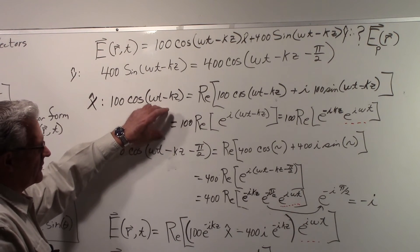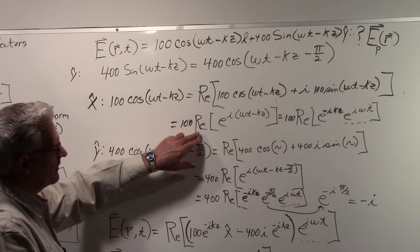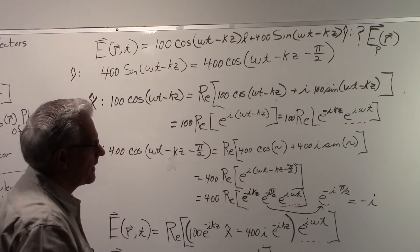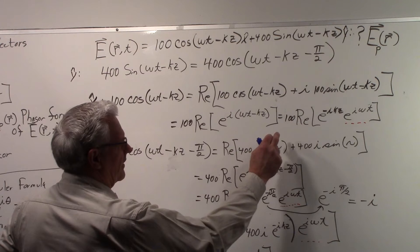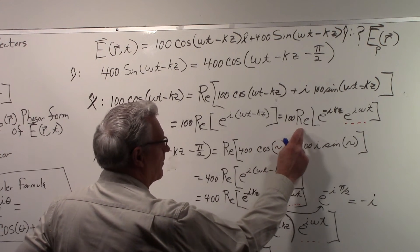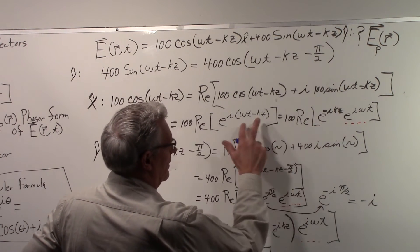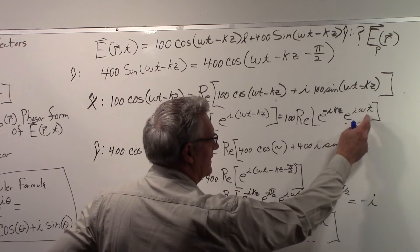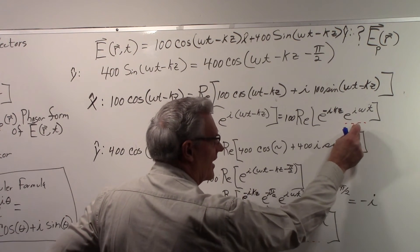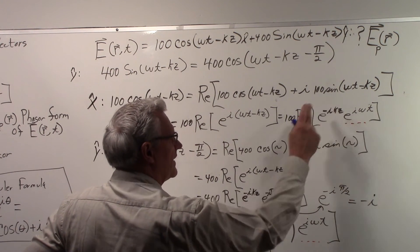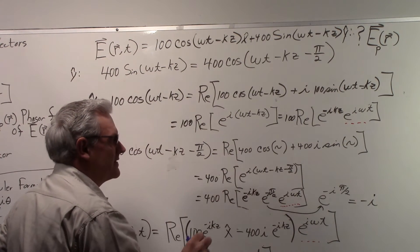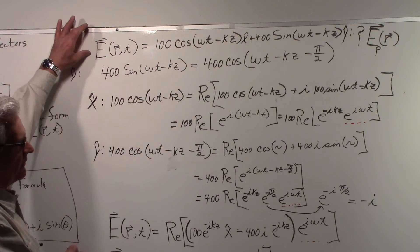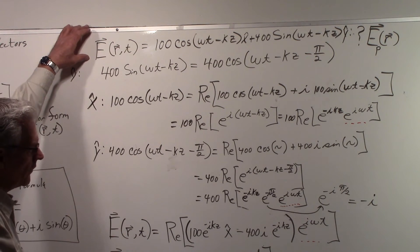Now we can use Euler's formula to rewrite this as 100 times the real part of e to the i omega t minus kz. And that we can rewrite again as 100 times the real part. We'll go through here and we have e to the minus i kz and e to the i omega t. And it's the e to the i omega t that we want to get. So we're getting this in a form that will allow us to write out the phasor form for this vector.